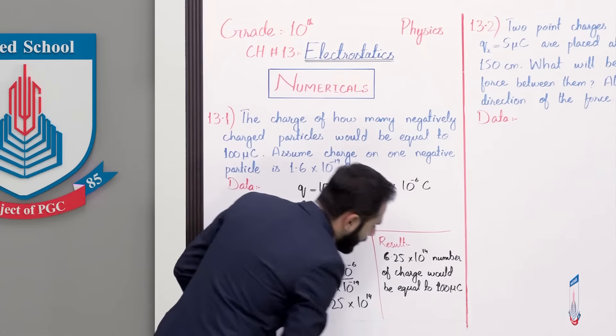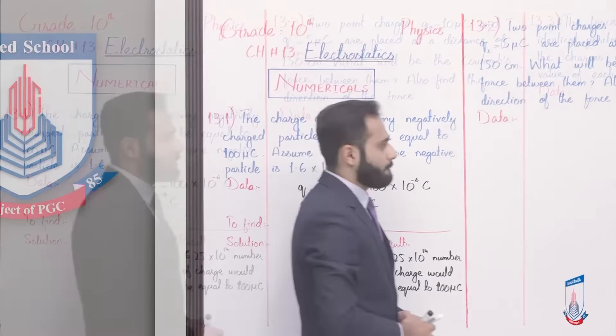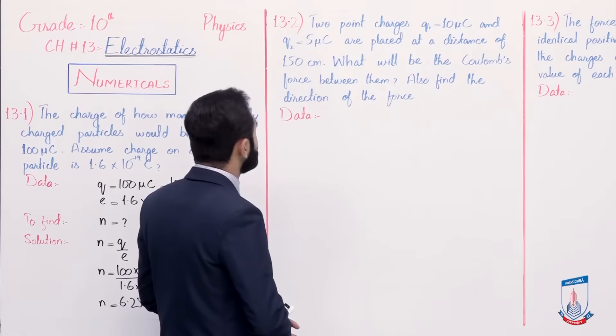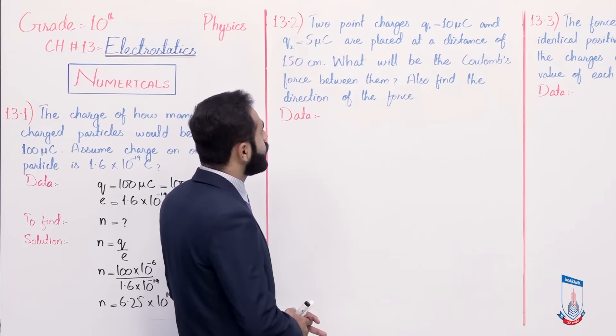I hope this numerical aapko samajh aaya. So move to the next board. Numerical 13.2. Two point charges q1 is equal to 10 micro coulomb and q2 is equal to 5 micro coulomb are placed at a distance of 150 centimeter. What will be the coulomb force between them?